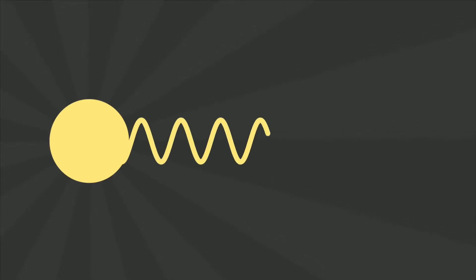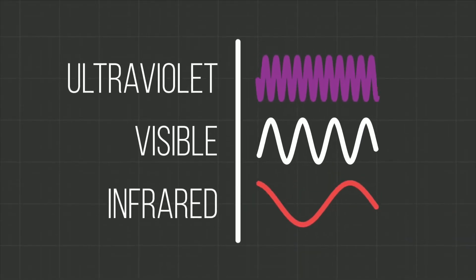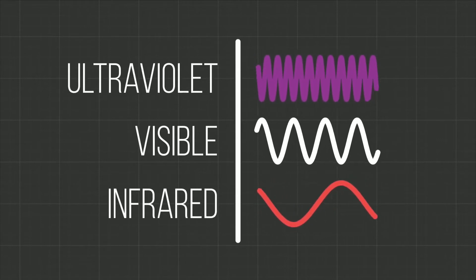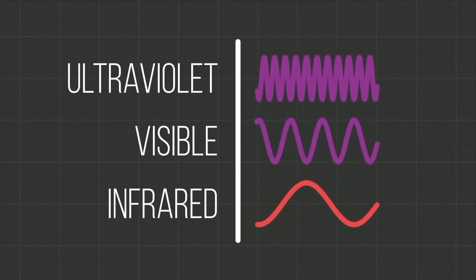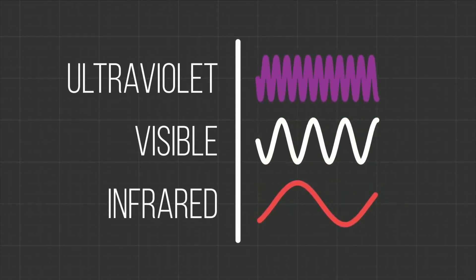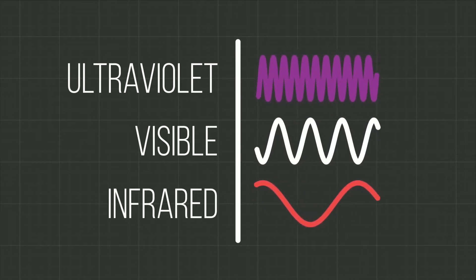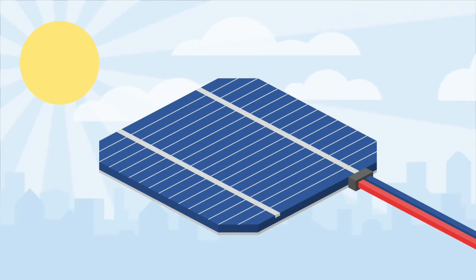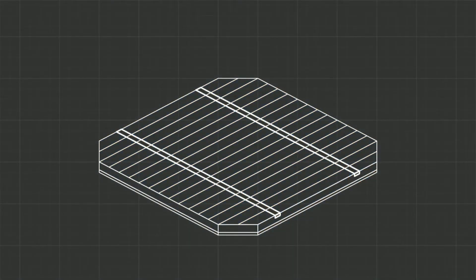The sun emits energy in the form of waves. These waves can range in length from short ultraviolet waves through the rainbow of the visible spectrum to long infrared waves. When the sun is shining, these waves move towards the earth and hit the surface of the solar cells. Let's take a closer look.